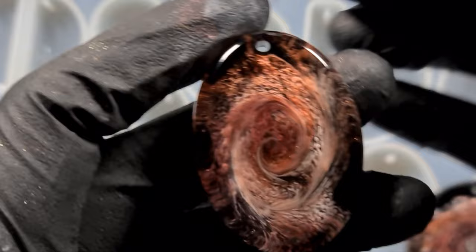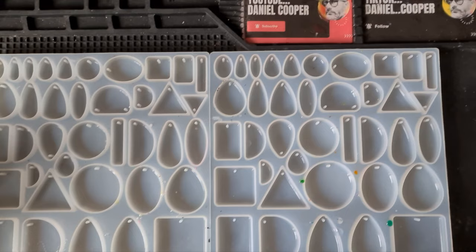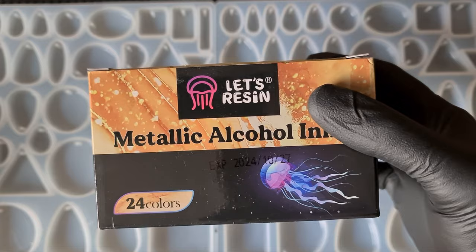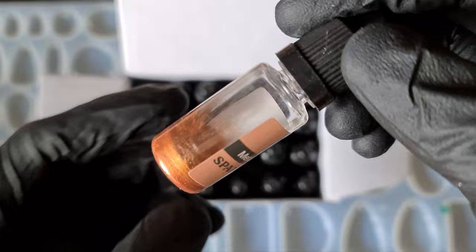So we are going to be using these metallic alcohol inks to make these really nice pendants. We're going to be playing around today with the Let's Resin metallic alcohol inks. It's 24 colors, some of them are very similar, but we're just going to have a play around.